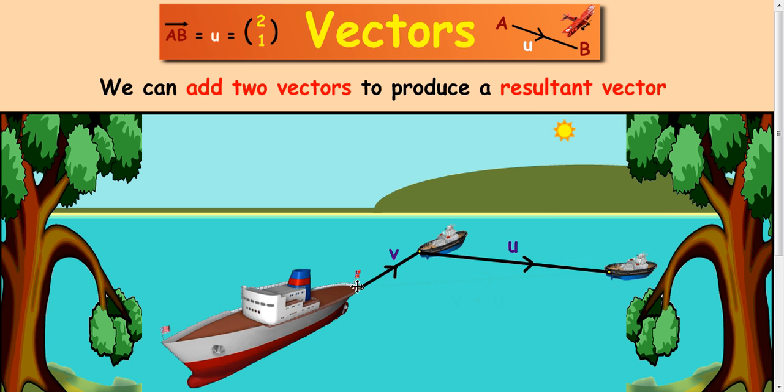So you can see the journey happening here, going along here and then going along there. To get the resultant vector, we just go from the start to the finish of the journey and draw a line. So the boat's direction is eventually going to travel along this red line here, which is really v plus u. The trick here is to put your vectors nose to tail to make the journey complete.